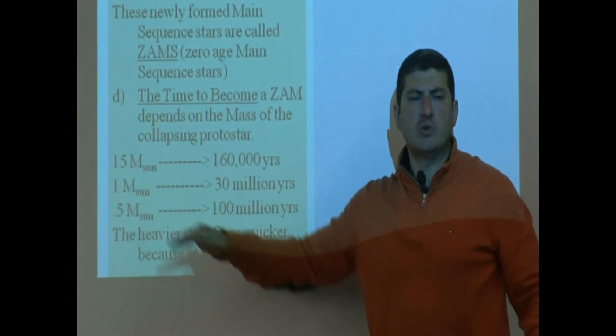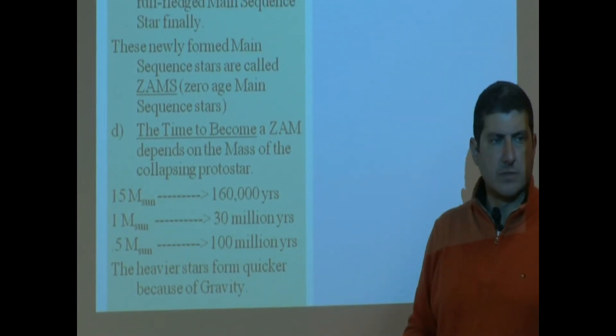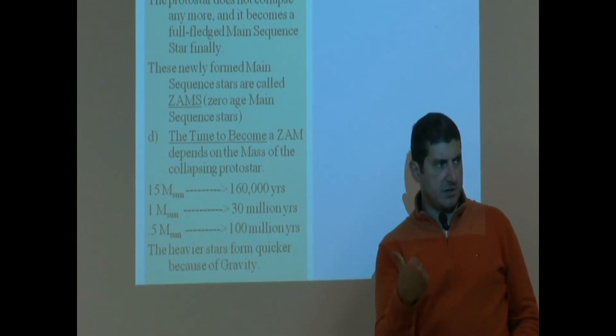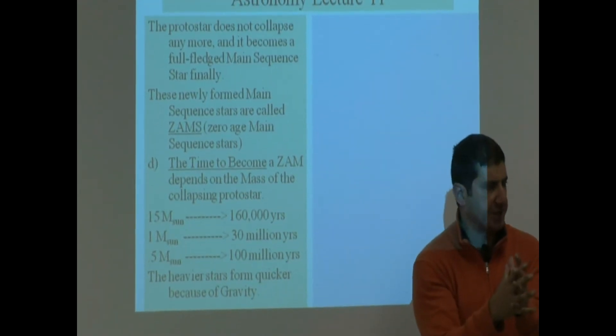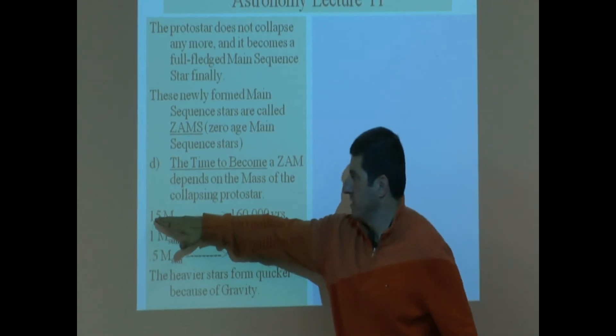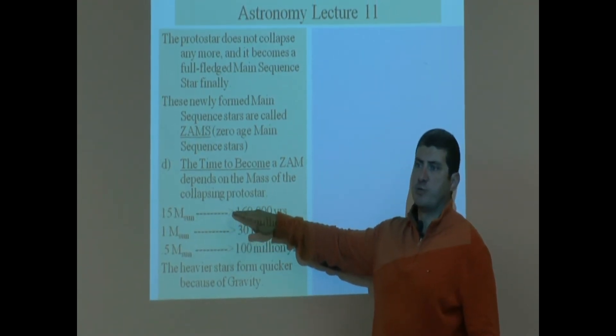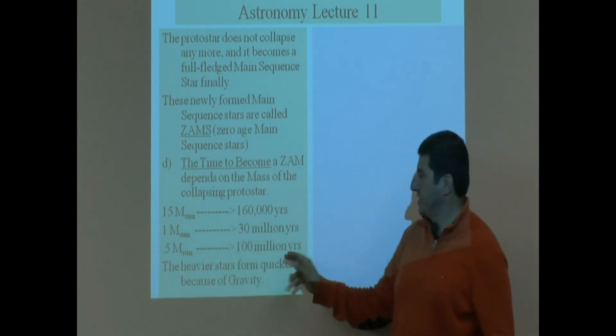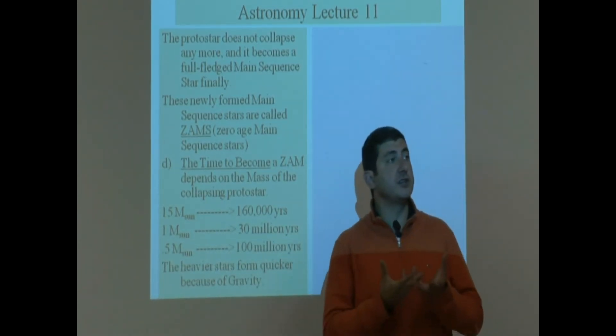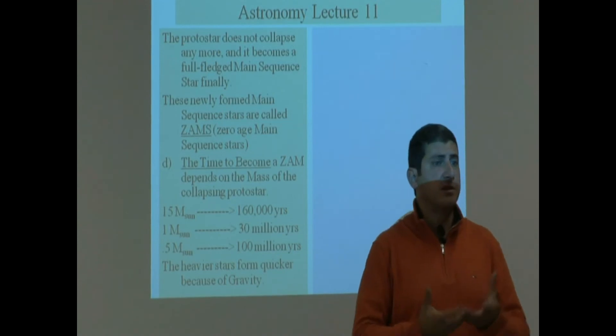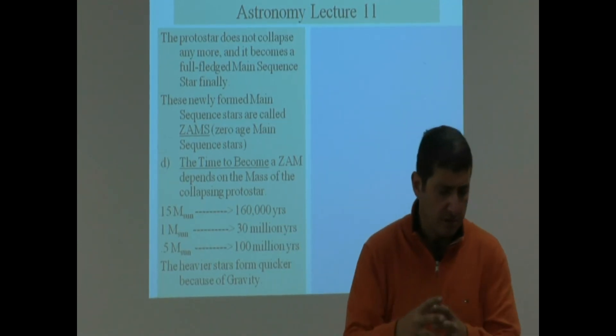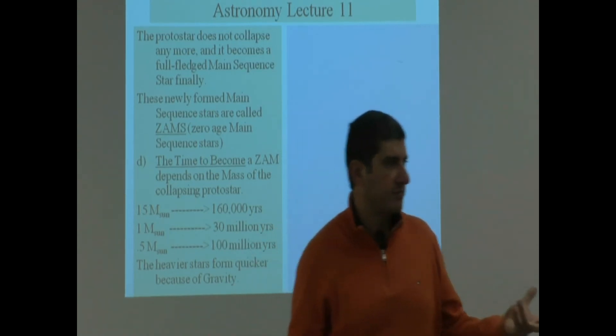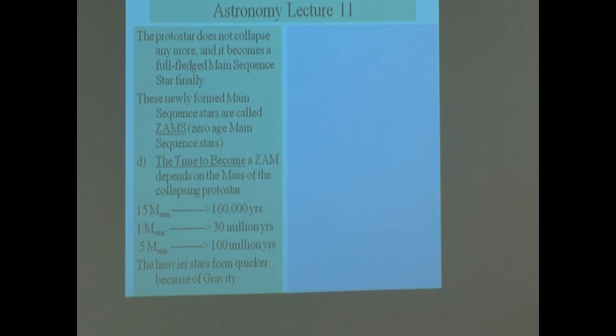So, what pattern do we see? The heavier the original gas, the faster it collapses. You see? 15 times solar mass, 160,000 years to form. If the star is light, it takes 100 million years to form. So, the heavier the star is, it forms quicker because it has more gravity. You see? It makes sense. Right? More gravity causes it to collapse faster.